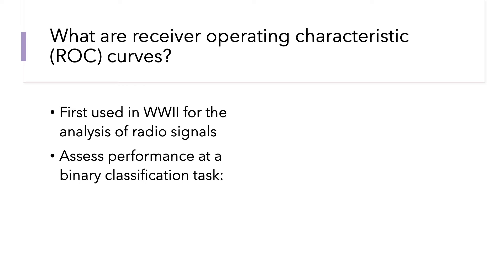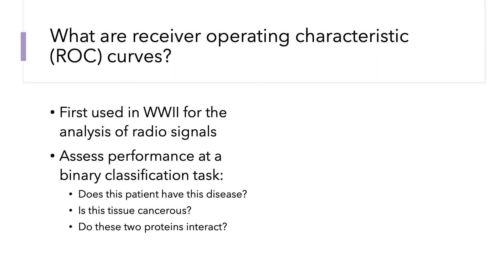There are all kinds of situations in mass spectrometry proteomics where these types of binary classification tasks come up. For example, does this patient have this particular disease, or is this tissue cancerous or not, or do these two proteins interact or do they not? In all of these cases, you see that there are two options to select from, or two classes.